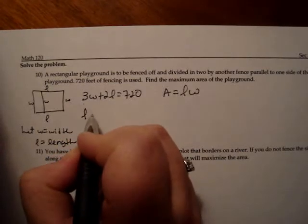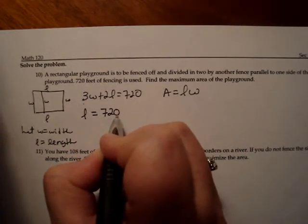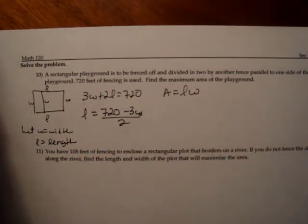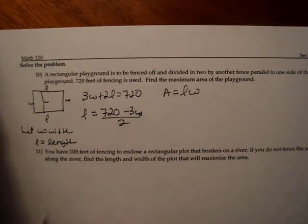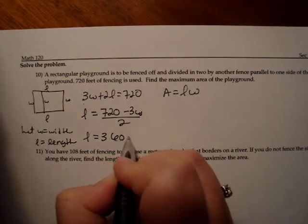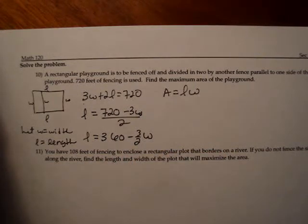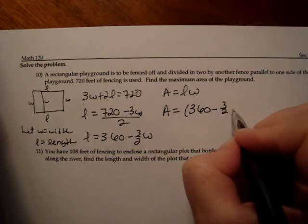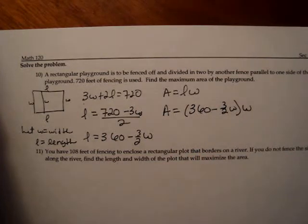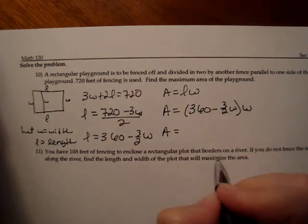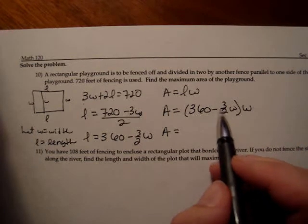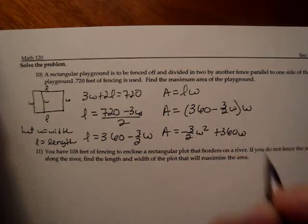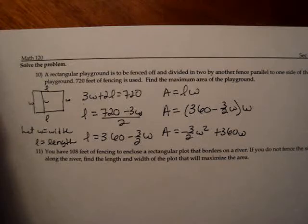I think I'll solve for l. L is equal to 720 minus 3w over 2, which is equal to 360 minus 3 halves w. Now I'm going to substitute and I get that the area is equal to 360 minus 3 halves w times w. Let's distribute and write it in the correct order. When I multiply the w times this negative 3 halves w, that's negative 3 halves w squared, and then I'll have plus 360w.